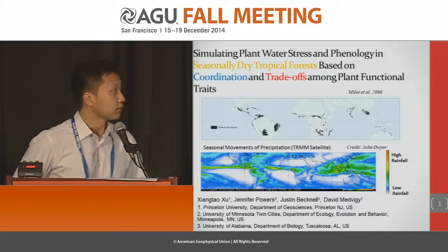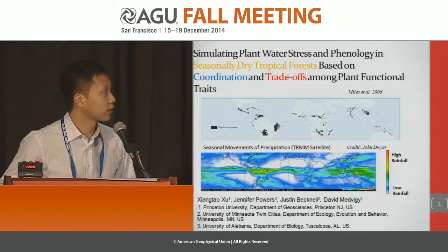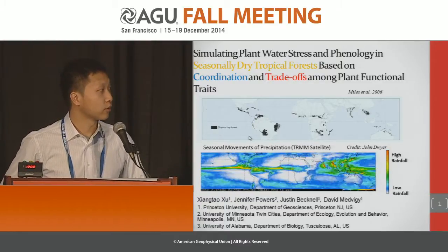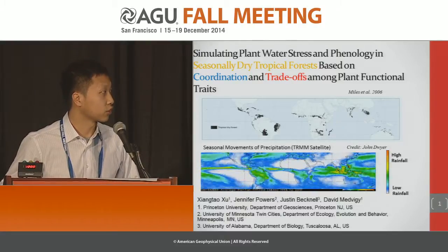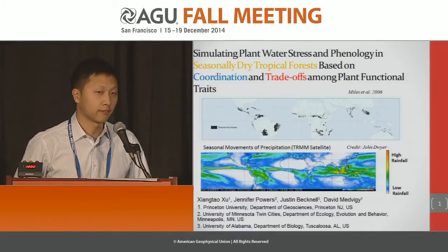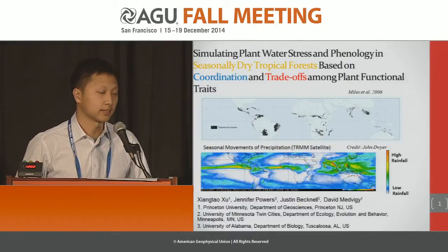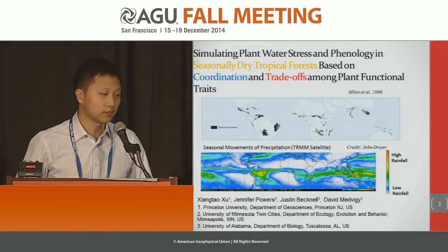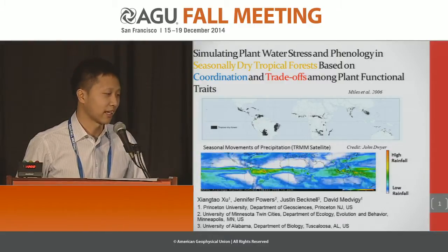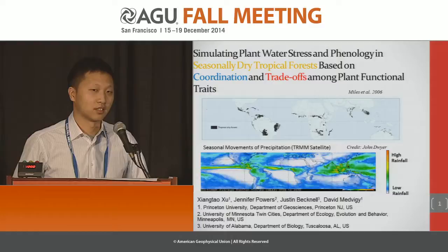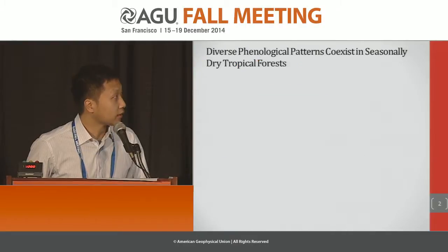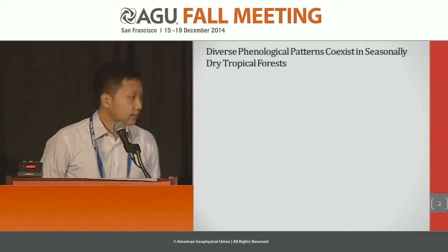As a short introduction, seasonally dry tropical forests are closed canopy forests mainly distributed in subtropical and tropical areas where rainfall is highly seasonal, as you can see from the satellite imagery. They account for over 40% of the forested areas in tropical regions. However, their phenology is understudied, partly because all the phenocameras and flux towers are in the Amazon or temperate forests, and remote sensing products are not performing very well because of cloud cover.